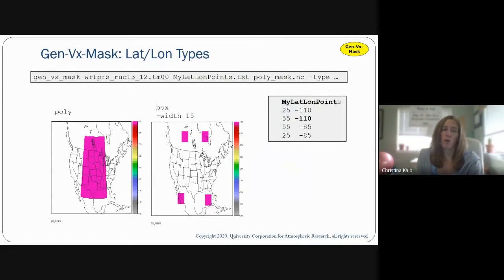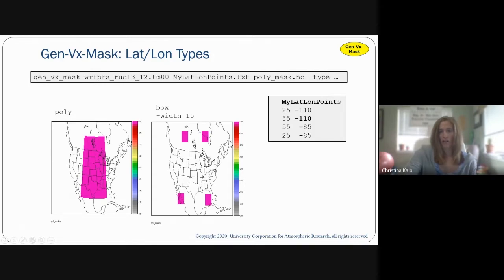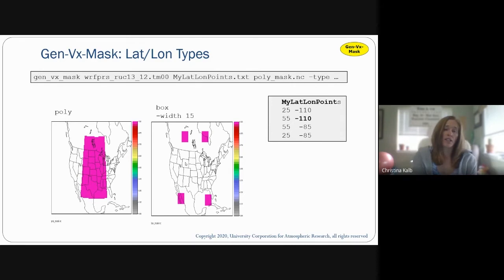Here are some examples. The first example shows the command in a gray box. We're calling GenVXMask with a WARP input file, a latlon points text file as the mask, and polymask as the output, then specifying the type. Two examples of type are shown: first, polyline — which connects the dots between four listed points, resulting in a square region. Second, box with a width of 15 grid points, giving four separate box regions. Further examples using the same file show circle or track commands, where the top images show distance from the lat/lon points, and thresholding at less than or equal to 500 gives four circle regions, or a track shape at less than or equal to 250.